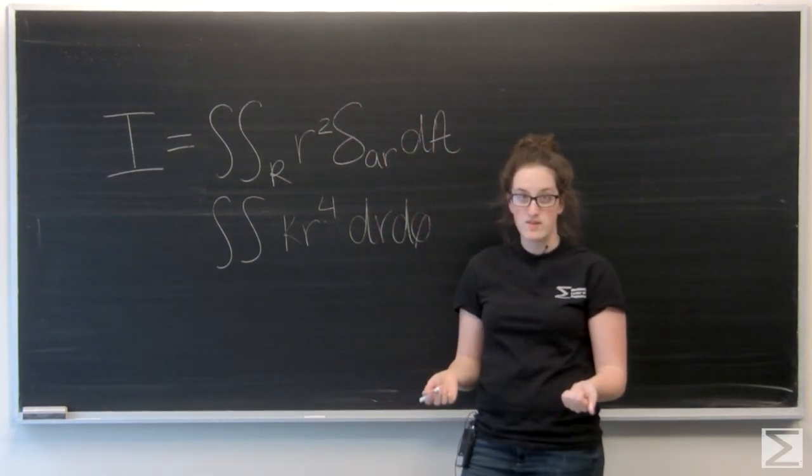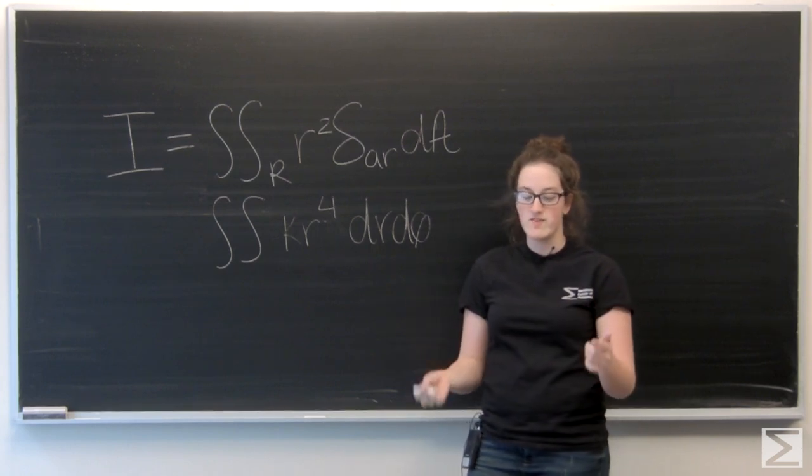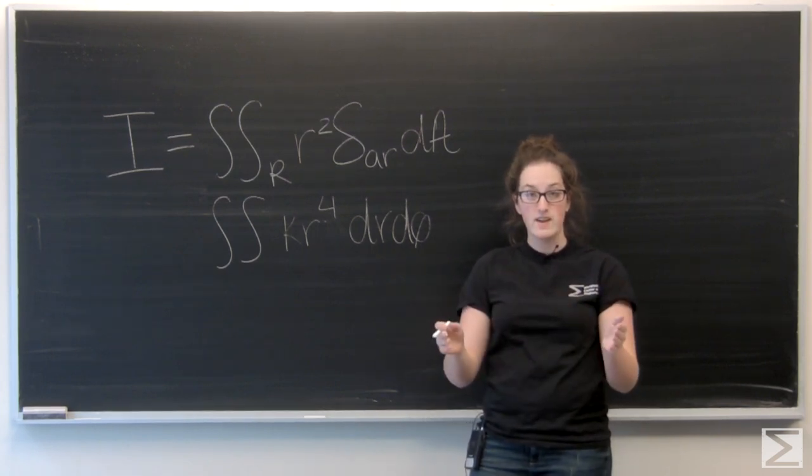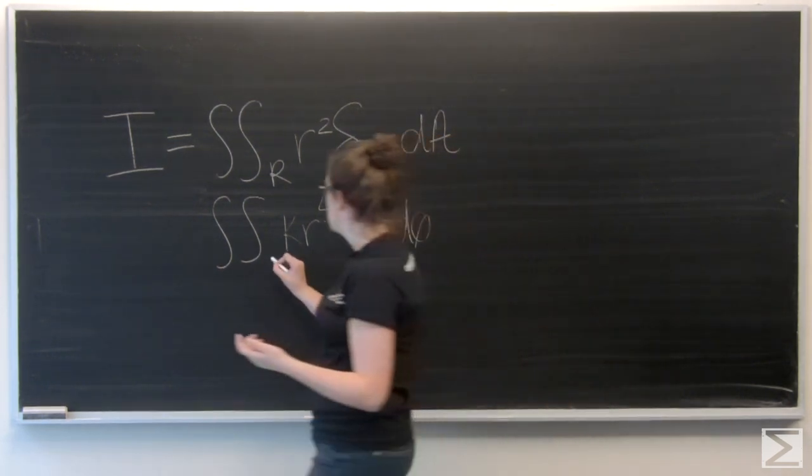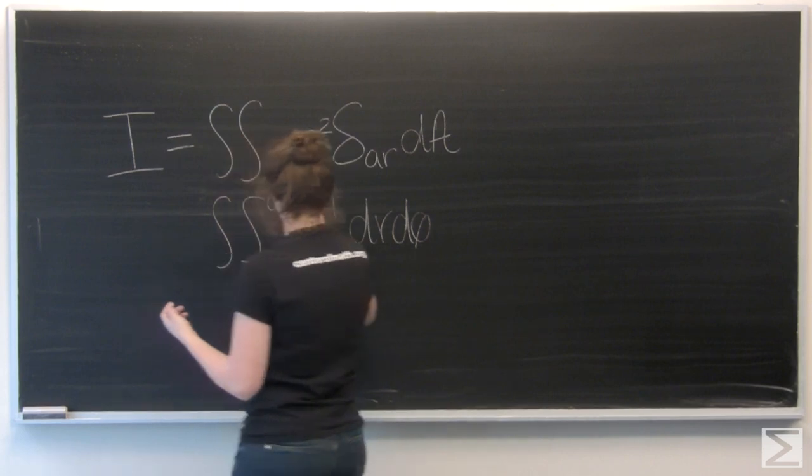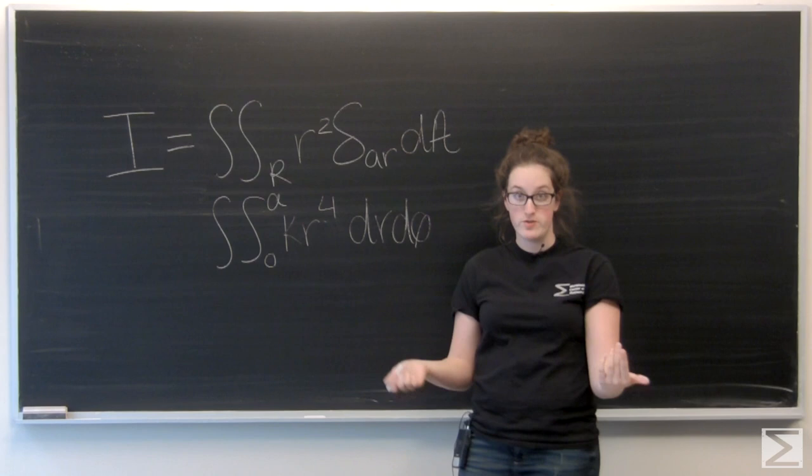So now I just need to set up some bounds of integration. Well, in the problem description, I'm given that the circle has a radius of a, so I'm going to integrate r from 0 to that a. And then we're looking at the whole circle, so theta goes all the way around from 0 to 2 pi.